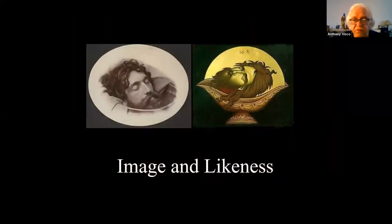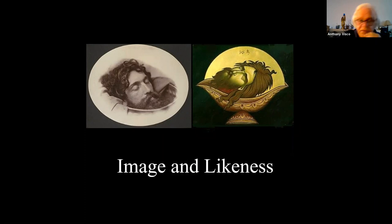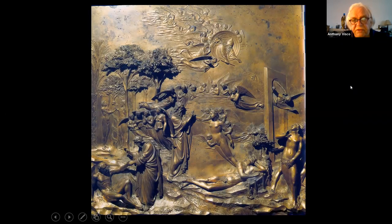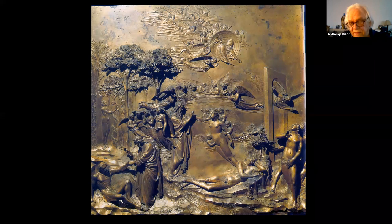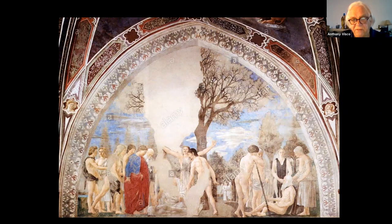Tonight we move on to image and likeness and the separation between the two — just as light and dark were separated, just as nude and naked were separated, the idea of image and likeness also gets separated. At the Fall, at the expulsion from Eden, the early desert fathers believed there was a separation between image and likeness — that yes, we had been made in the image and likeness of God.